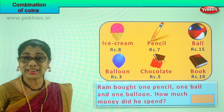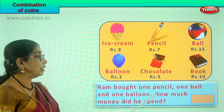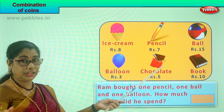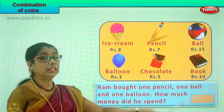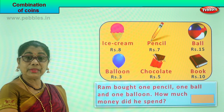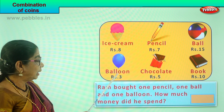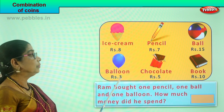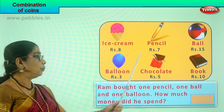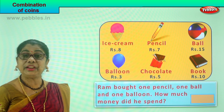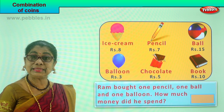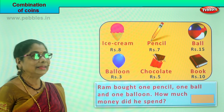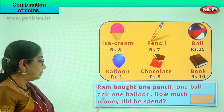Shall we add and see? A pencil is seven rupees, so take a five rupee coin and a two rupee coin — put it in your hand. A ball is fifteen rupees — take out a ten rupee coin and a five rupee coin. A balloon is three rupees — take out a two rupee coin and a one rupee coin. So you have seven, three, and fifteen. Seven rupees plus three rupees is ten rupees. Fifteen rupees plus ten rupees is twenty-five rupees.